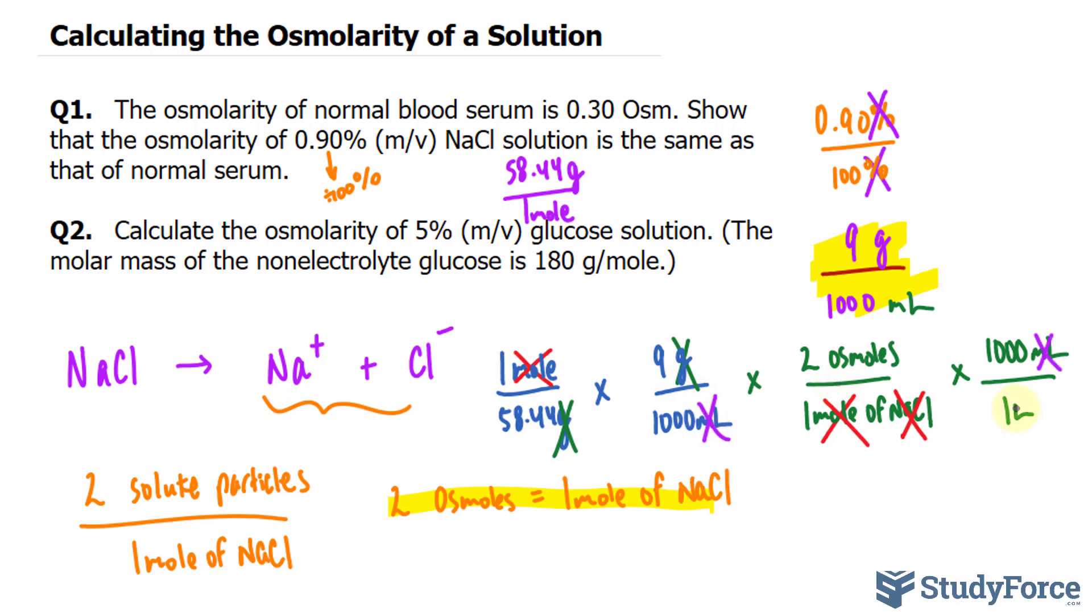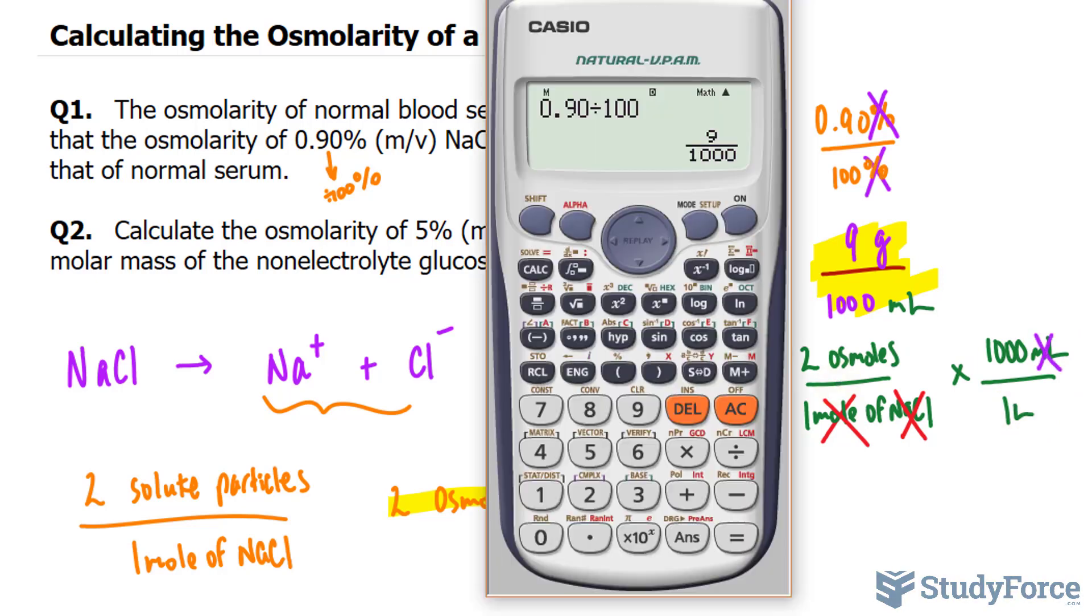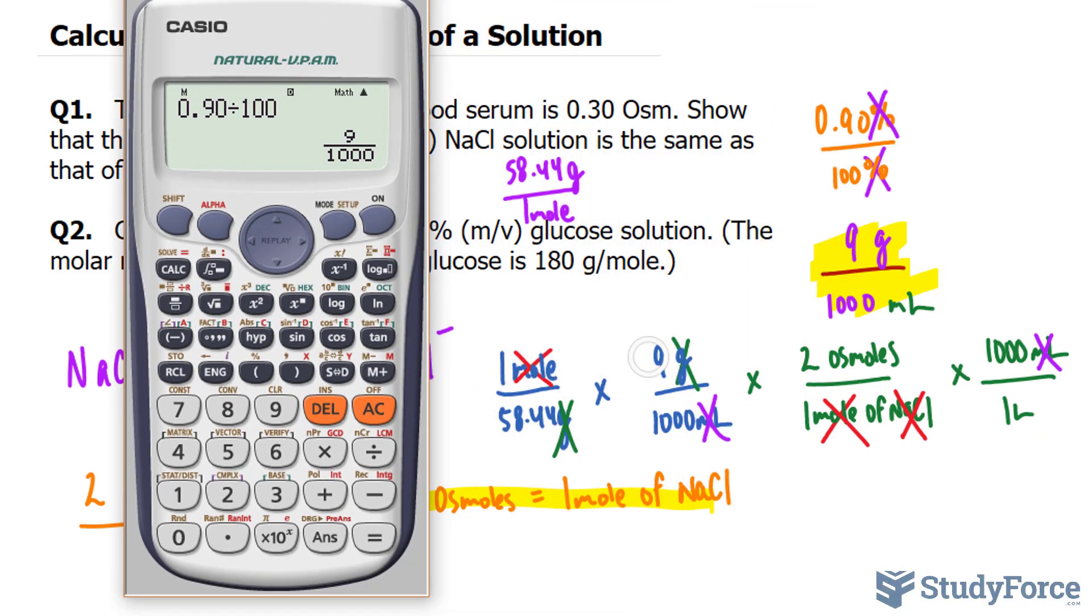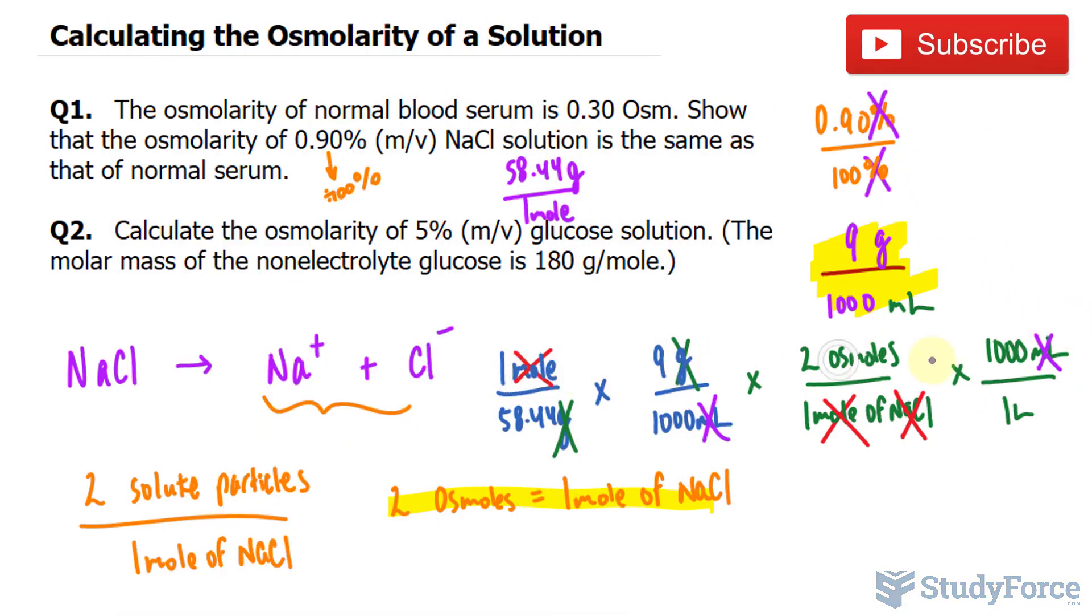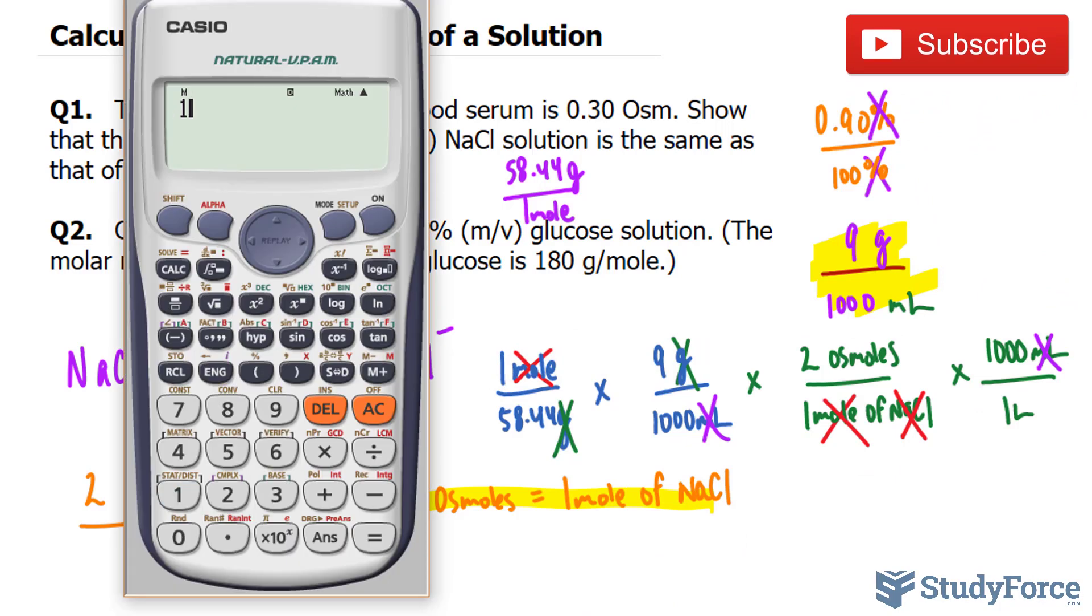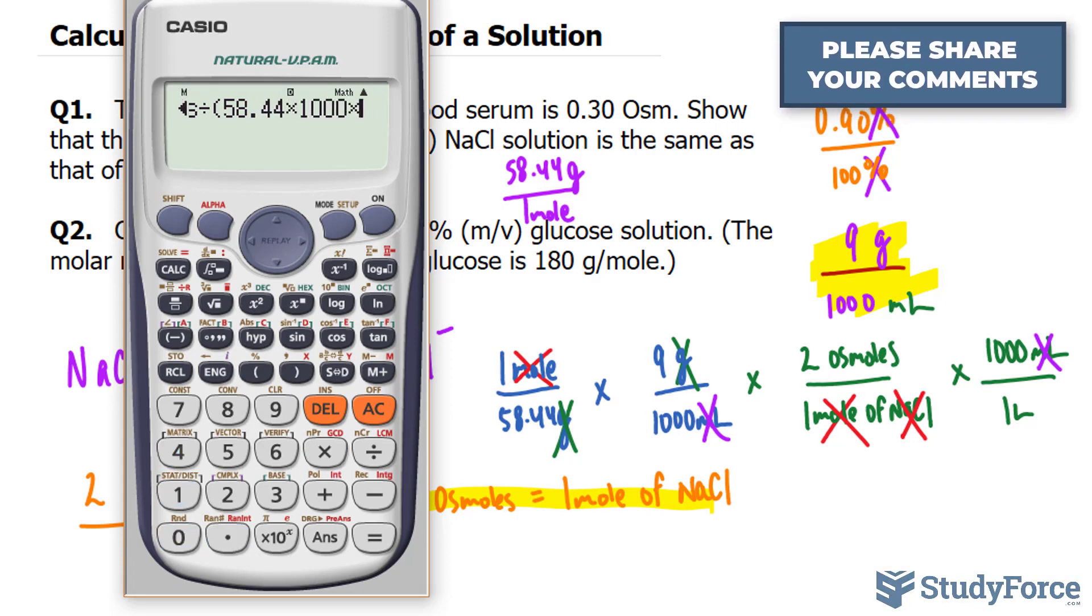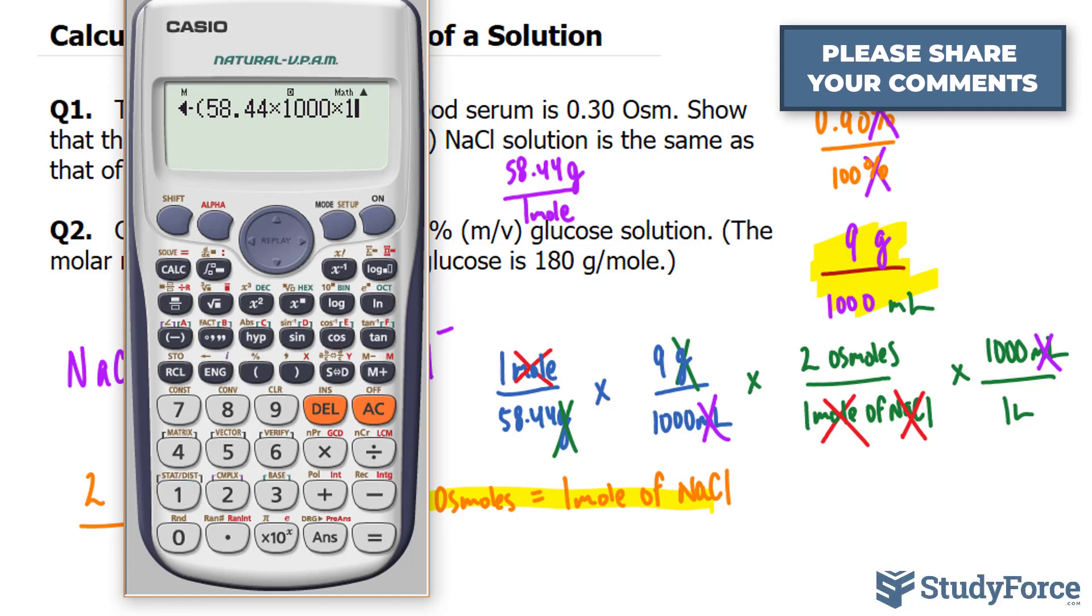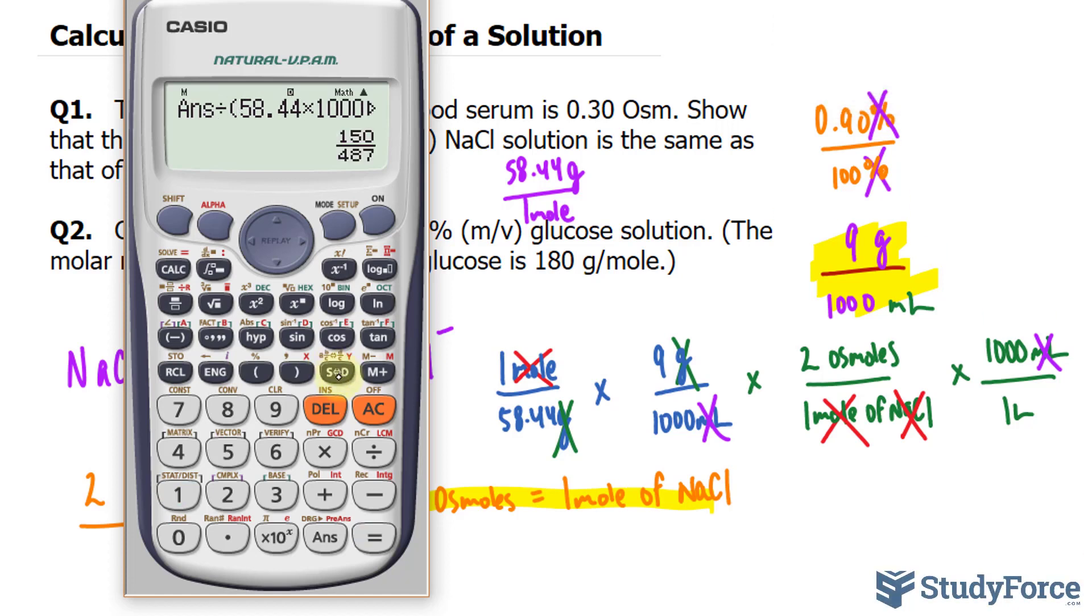This will effectively give us the osmolarity. Let's go ahead and use our calculator now. We'll multiply all the numbers at the top of these fractions together. So 1 times 9 times 2 times 1,000 and then I'll divide all the numbers at the bottom: 58.44 times 1,000 times 1 times 1 and we end up with 0.308. Notice how it's the same as what was written in the question.